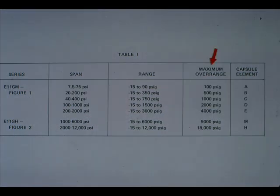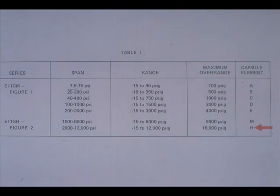Overrange protection has to be considered when making the capsule selection. Two elements, M and H, for the E11GH are listed. These elements are the C-type Borden tube and are interchangeable.